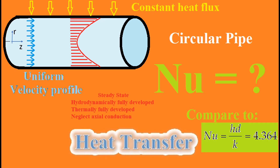Let's take a look at this heat transfer problem. We have a circular pipe setup with steady laminar flow and constant properties. There is a constant heat flux at the wall of the pipe. They want us to consider the velocity profile uniform, meaning it's a constant. The flow is hydrodynamically and thermally fully developed. We need to neglect axial conduction and find the Nusselt number, then compare it to the official textbook value.